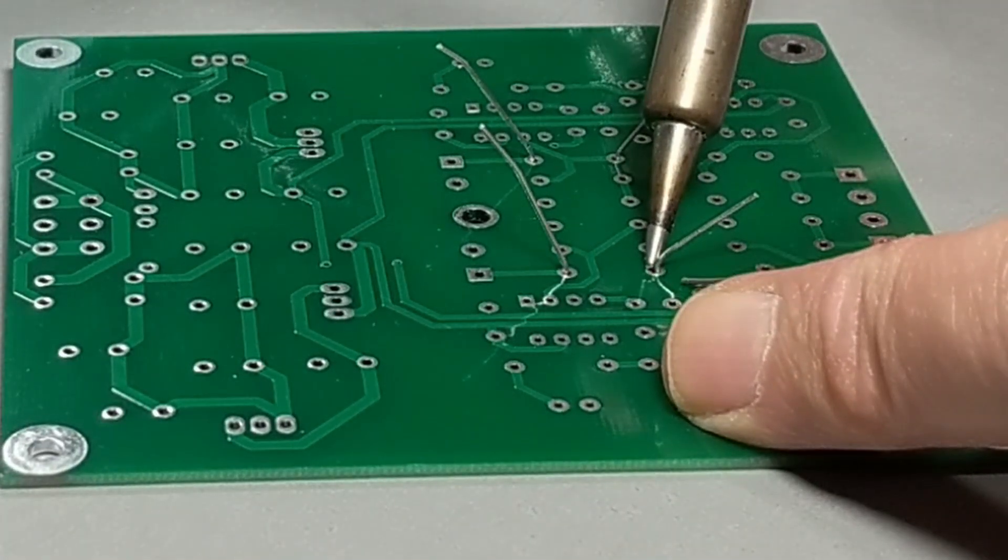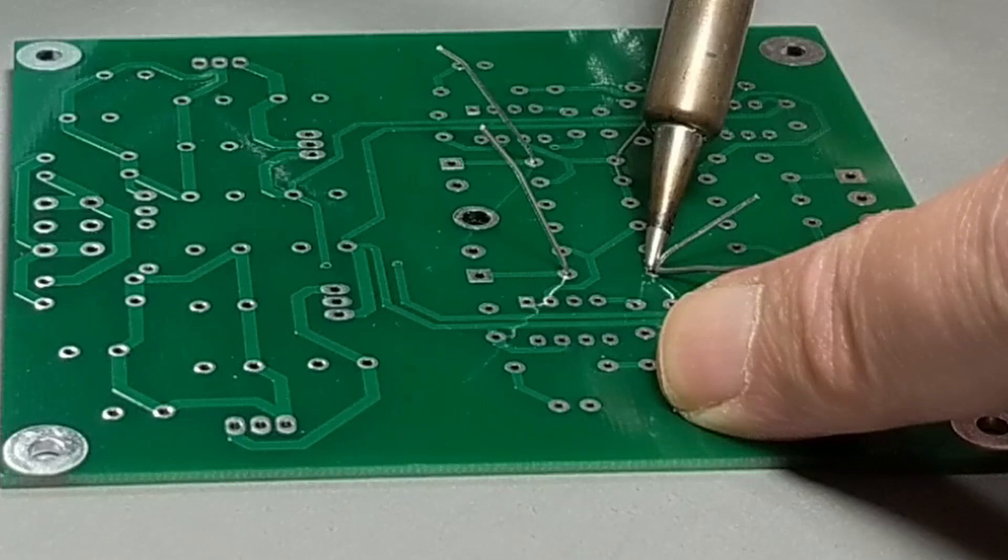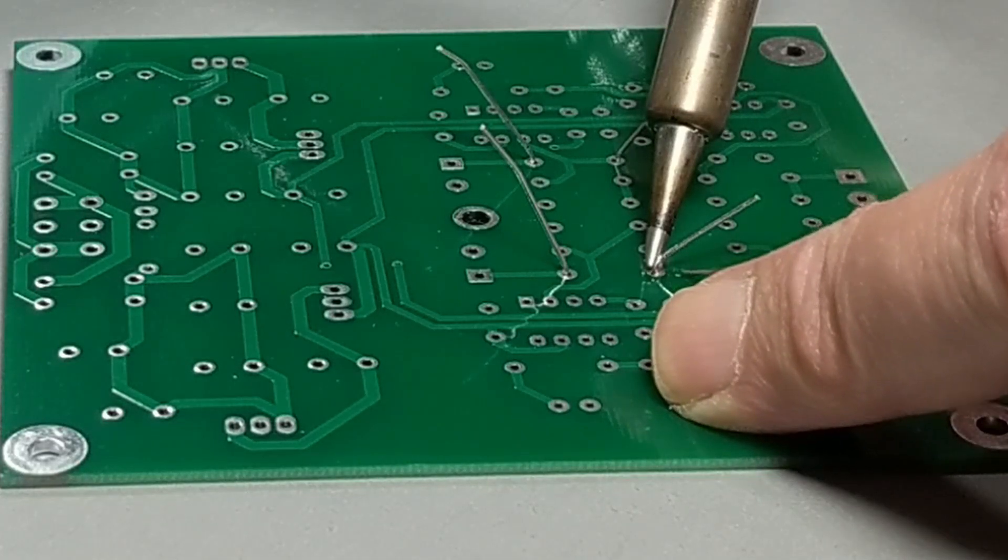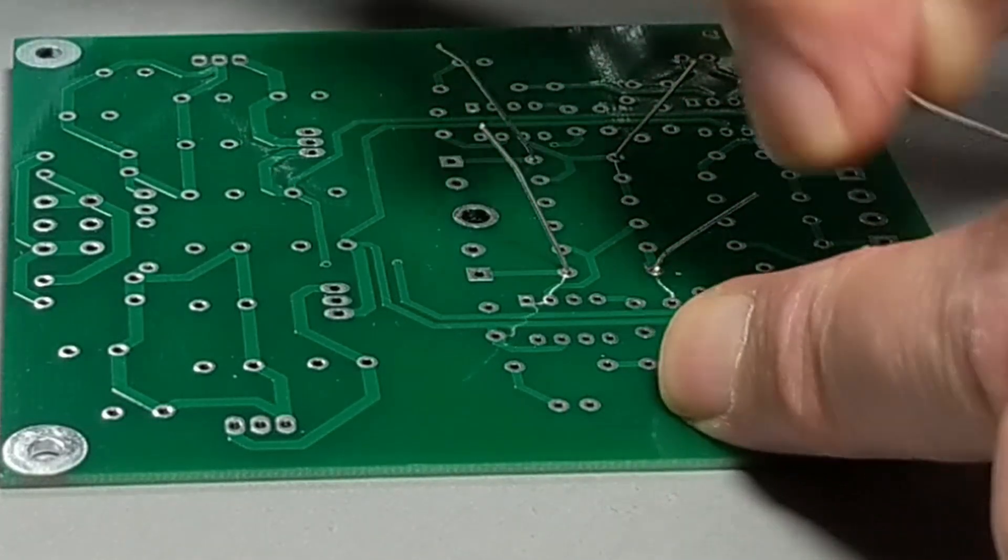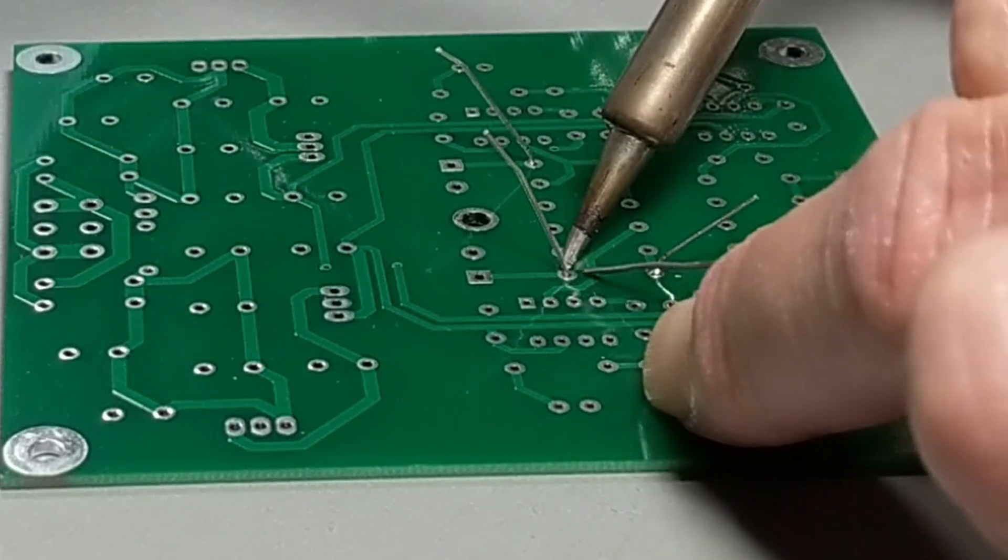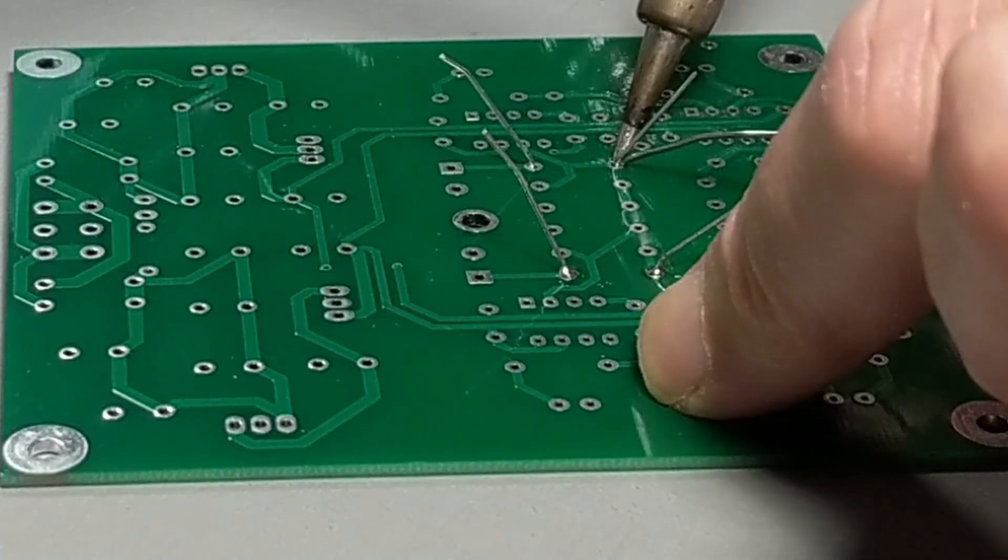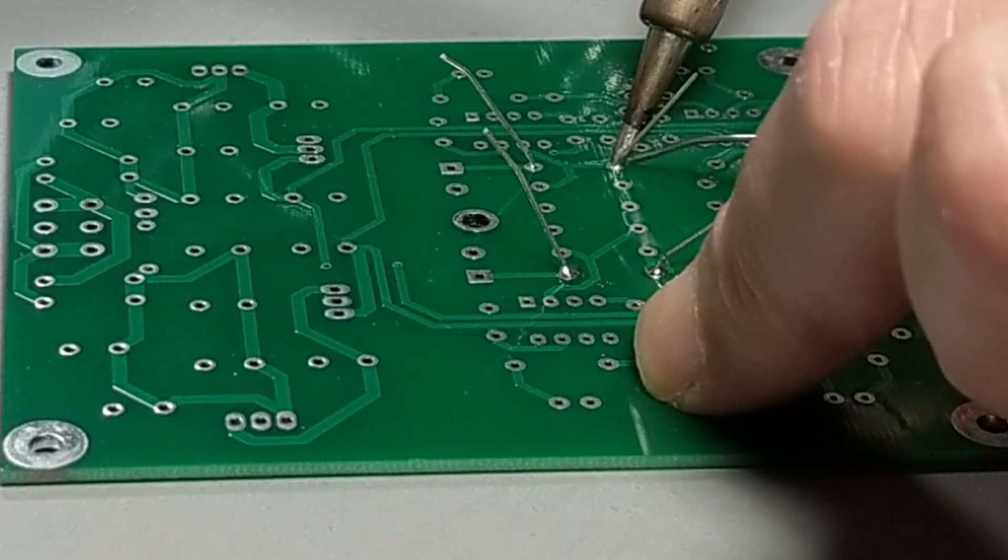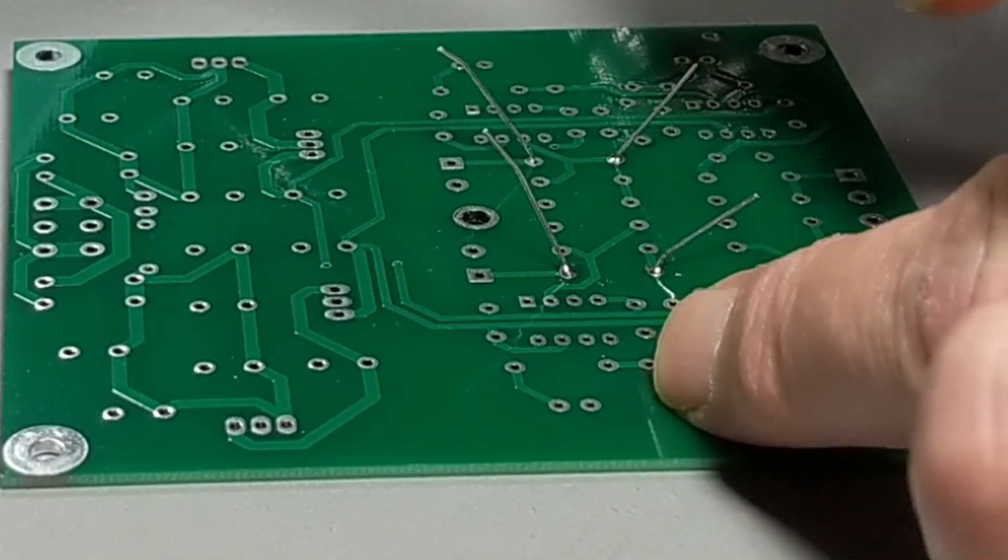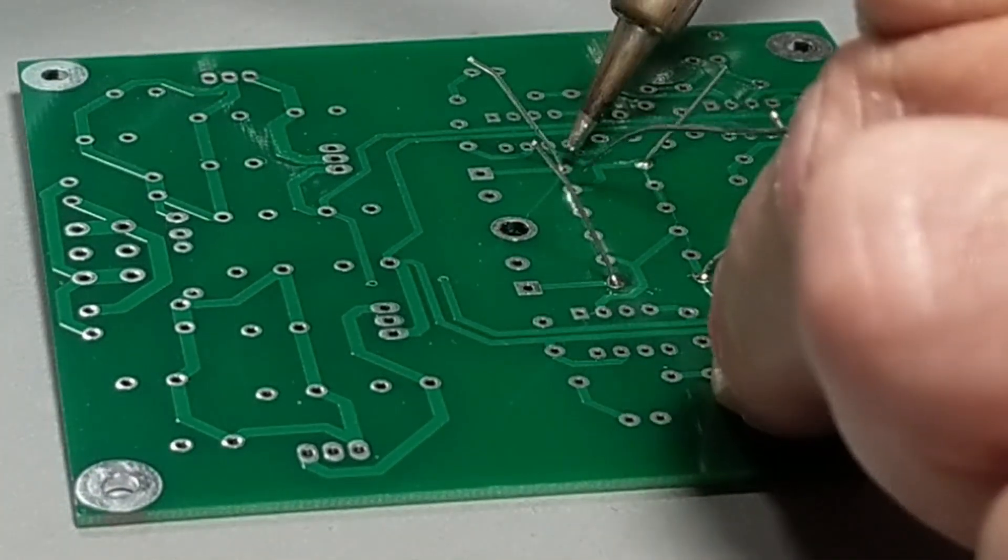Heat the work and the lead and apply the solder where the work and the lead touch. It doesn't take a lot. You shouldn't have globs of solder. And the surfaces should be wet and there should be a nice transition.